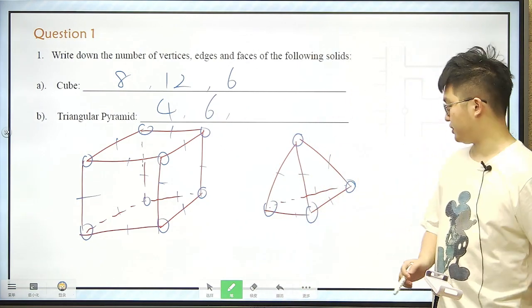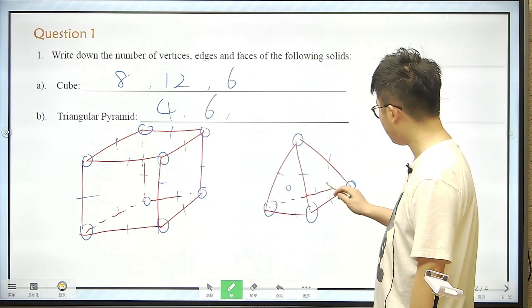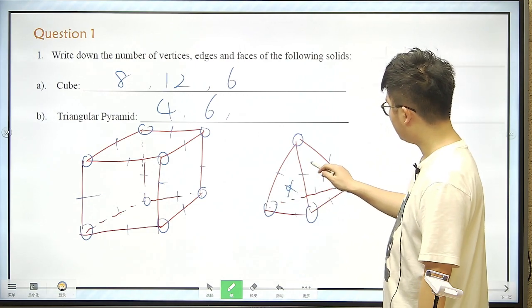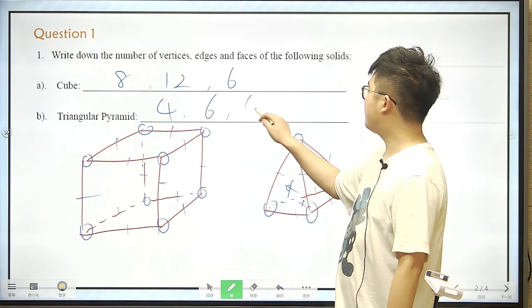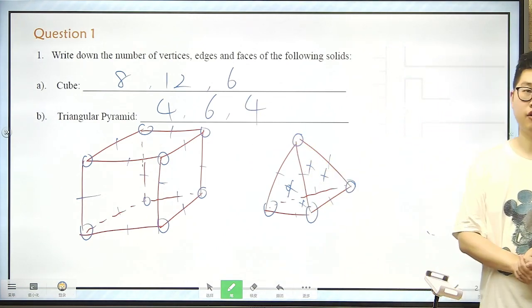And how many faces? We count 1 over here, 1 over here, 1 in the back, 1 in the back, and 1 in the bottom. So 4 faces.